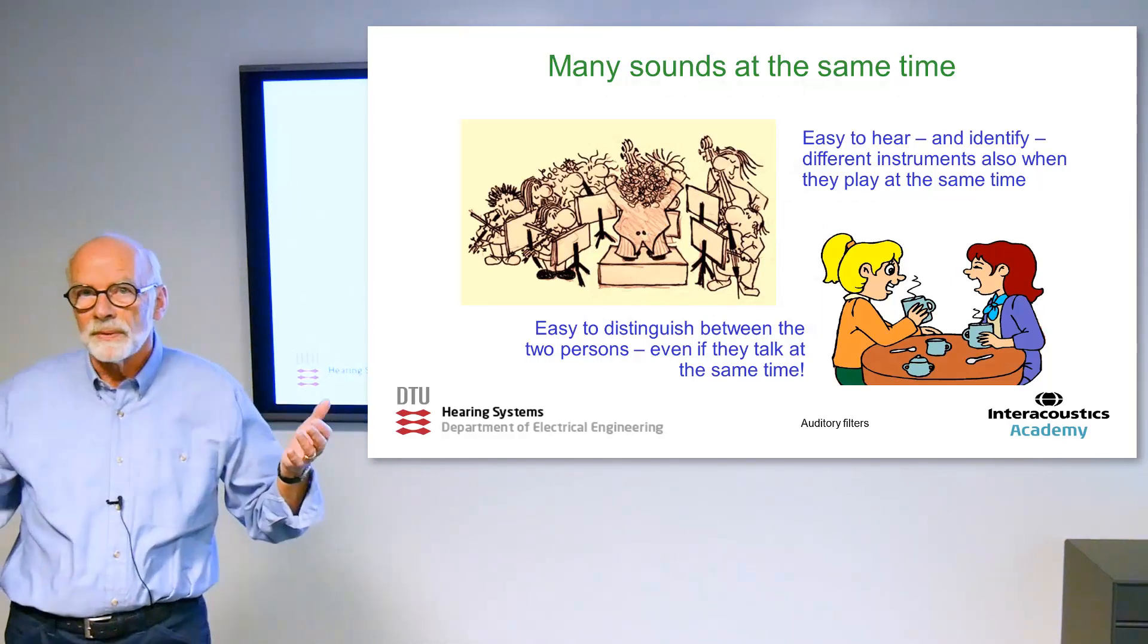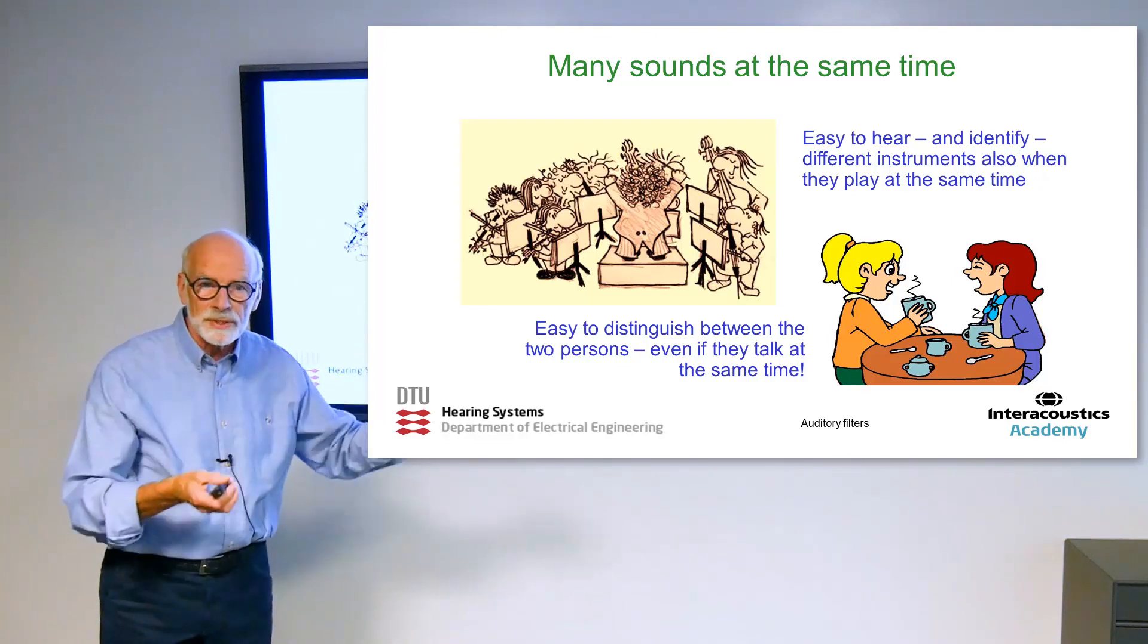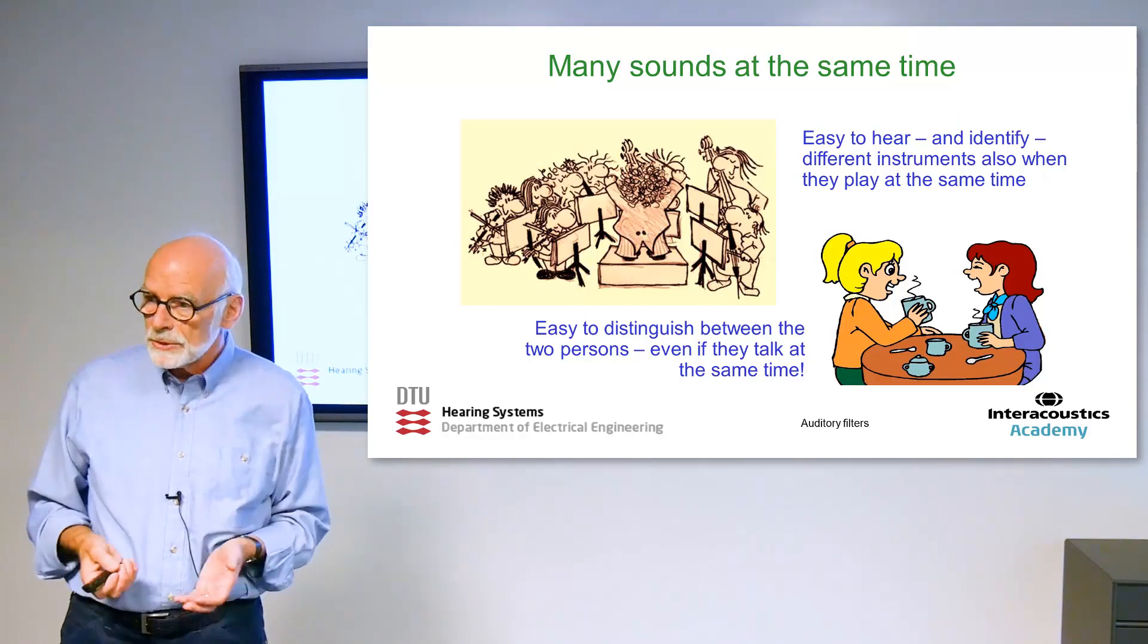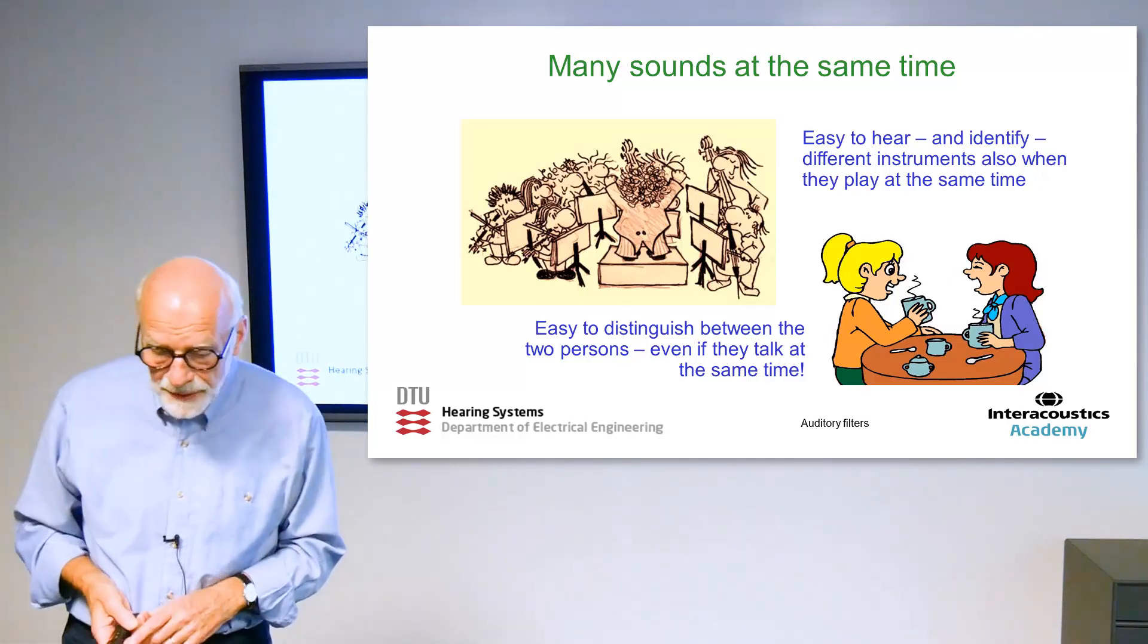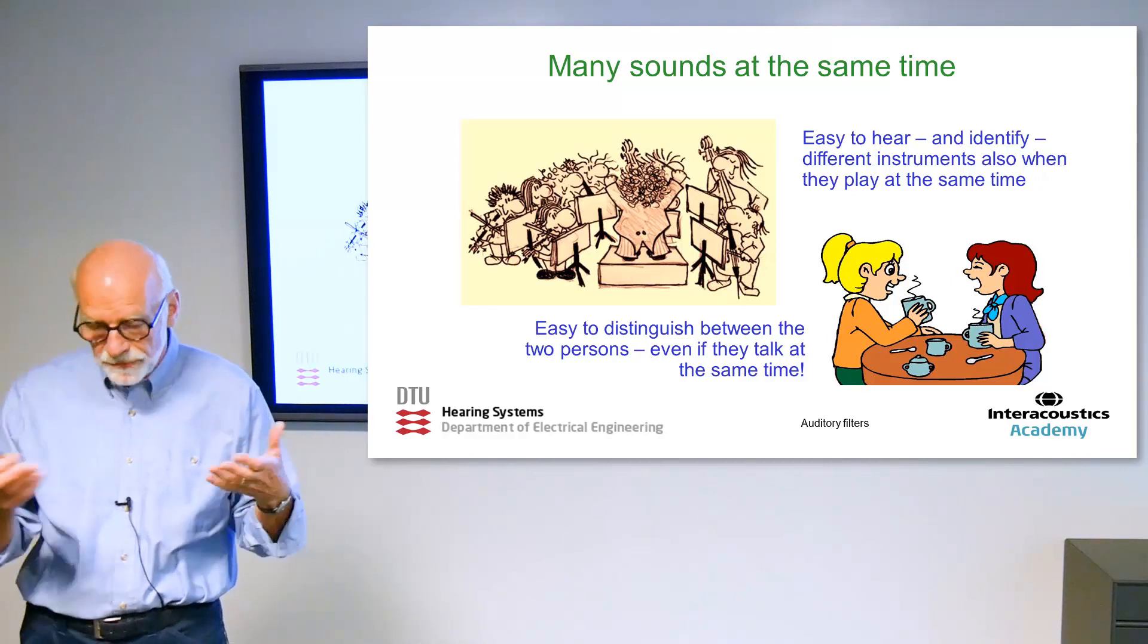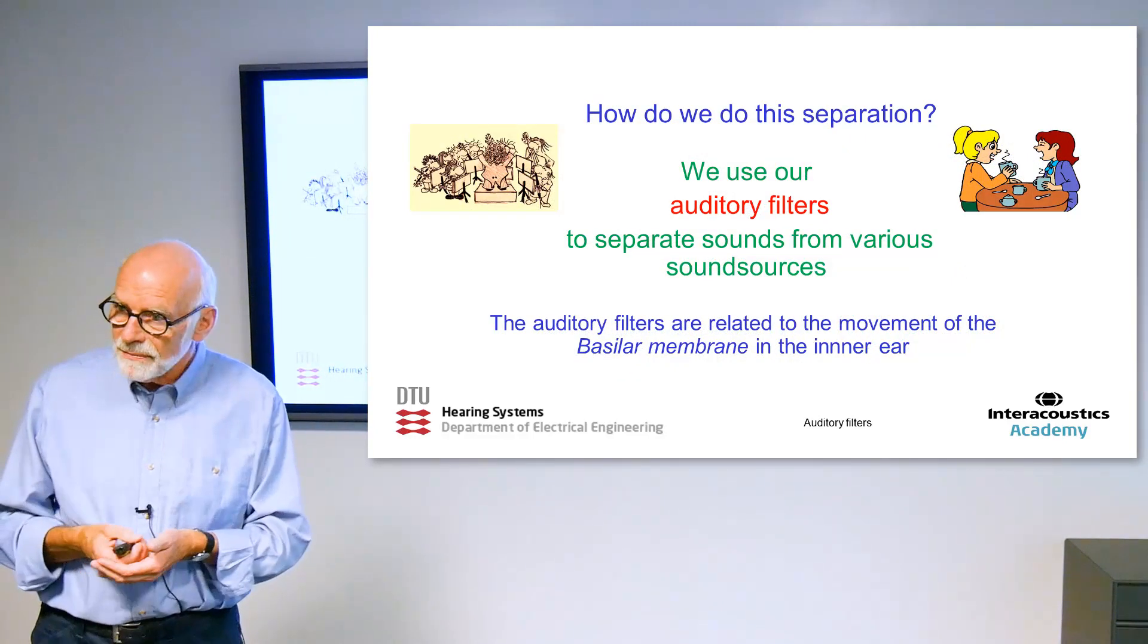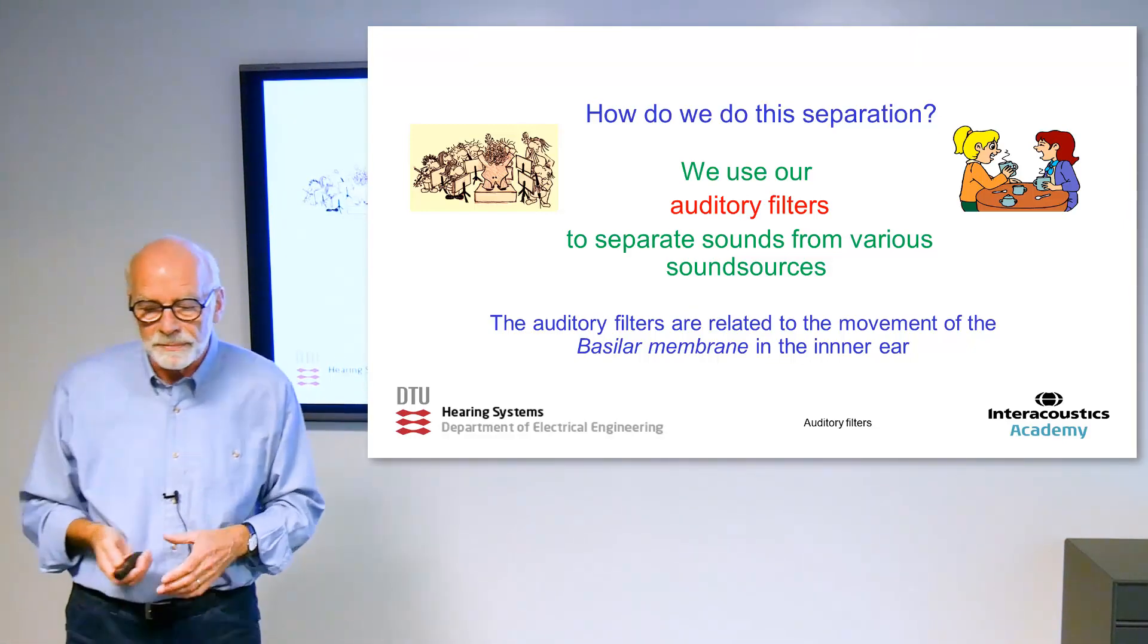The concept here is about many sounds heard at the same time. For example, an orchestra. You have an orchestra, some people are sitting there playing the different instruments. And it is, for us, easy to hear and identify different instruments also when they play at the same time. And we use our auditory filters for that. If we have two people talking, it's also easy to distinguish those two people from their voices, even if they talk at the same time. How do we do this separation? We do it by means of our auditory filters.